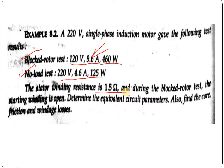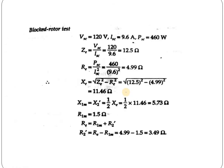The problem will be solved in the same way as we calculated the equivalent circuit parameters per our previous lecture. We will start our calculation with the block rotor test. In the block rotor test, the values given are: voltage at short circuit VSC equals 120V, meaning at block rotor test the applied voltage is 120V. ISC equals 9.6A, that means the short circuit current is 9.6A. And PSC equals 460W, which is the power input at block rotor test condition.